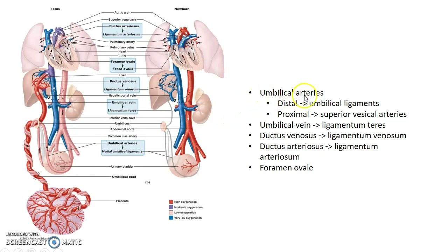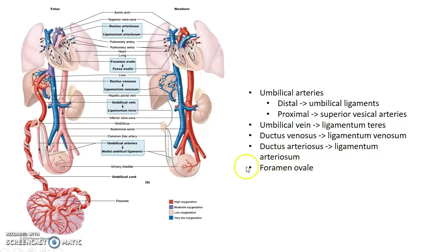After birth the following changes take place. There will be closure of umbilical arteries — the distal umbilical artery becomes umbilical ligaments and the proximal part remains as superior vesical arteries. There will be closure of umbilical veins; the remnant is ligamentum teres. There will be closure of ductus venosus and the remnant is ligamentum venosum. There will be closure of ductus arteriosus and its remnant is ligamentum arteriosum. There will also be closure of foramen ovale. Thus the circulation becomes like that of an adult system.